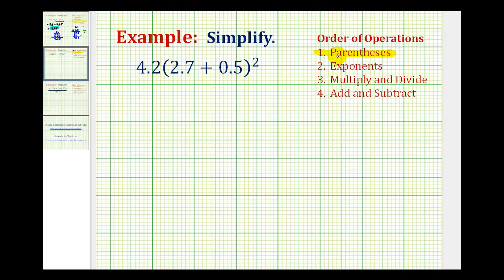So in this example, we need to determine the sum here first. So to do this, we'll write this vertically, lining up the corresponding place values. So we'll have 2.7 plus 0.5.